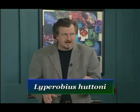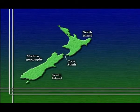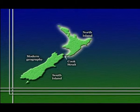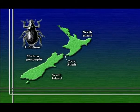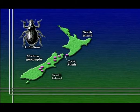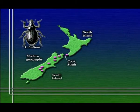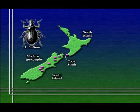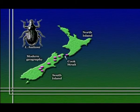Weevils in general are a kind of beetle. Most beetles can fly, but this particular weevil, Liporobius huttoni, is flightless — it cannot fly. This beetle has an interesting distribution. It's found in New Zealand, which is divided into two large islands, the North Island and the South Island. This particular weevil is found both on the North Island and on the South Island — specifically in the mountains of the northern South Island and on mountainous cliffs at the southern part of the North Island.